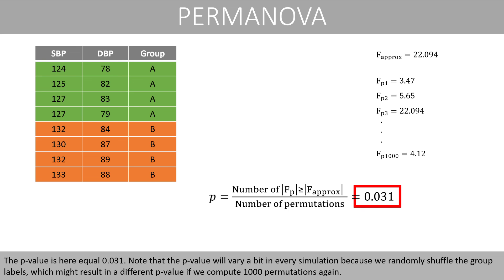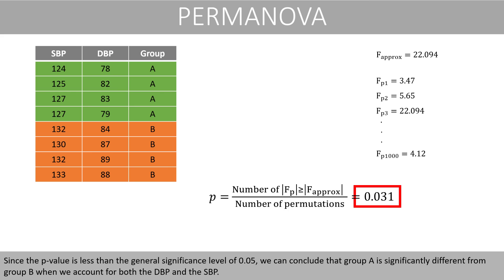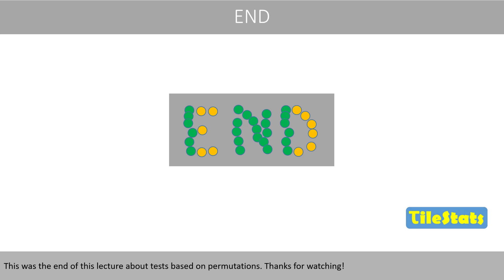Note that the p-value will vary a bit in every simulation because we randomly shuffle the group labels, which might result in a different p-value if we compute 1,000 permutations again. Since the p-value is less than the general significance level of 0.05, we can conclude that group A is significantly different from group B when accounting for both the diastolic and systolic blood pressure. This was the end of this lecture about tests based on permutations. Thanks for watching.